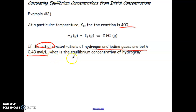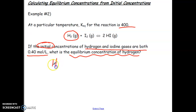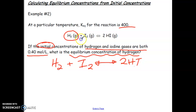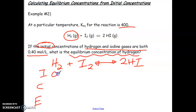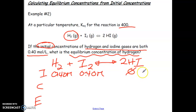What they're asking us to solve for is the equilibrium concentration of hydrogen. So let's start by writing out our ICE table. We have initials of 0.40 and 0.40, and of course products always begin the reaction with nothing.